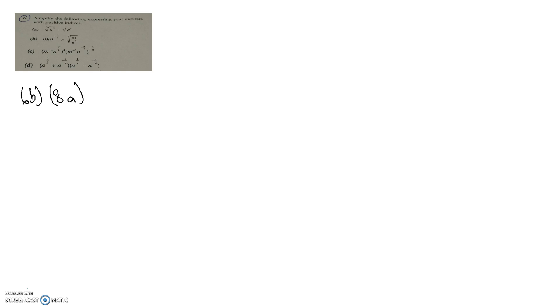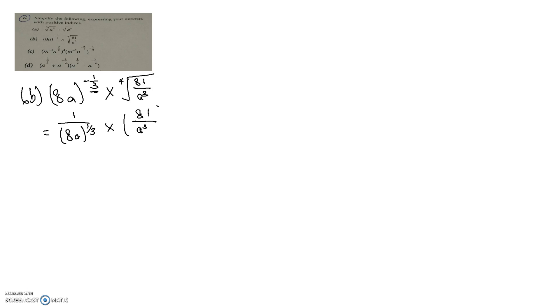Moving on to question 6B, which is slightly more complicated but uses the same laws of indices. We have 8 to the power of negative 1 third, multiplied by the fourth root of the expression 81 over a cubed. Very quickly, since this is negative 1 third, we're going to make it into a positive index straight away by taking the reciprocal of the whole term, and then express it as an index as well.